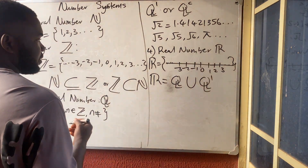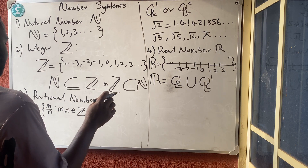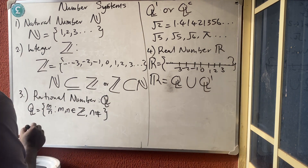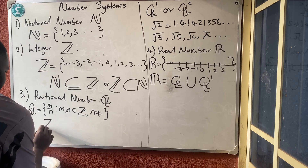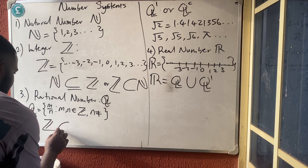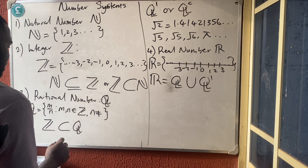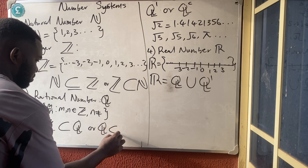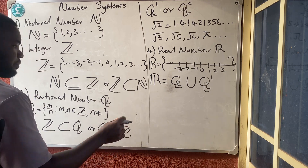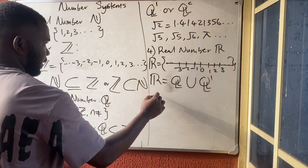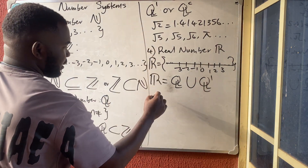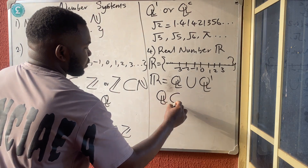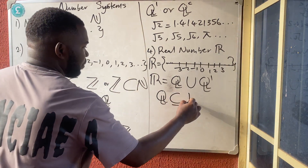We have just five systems of numbers. Please don't forget that every integer is a subset of rational numbers, or that rational numbers are a superset of integers. Equally, every rational number is a subset of real numbers.